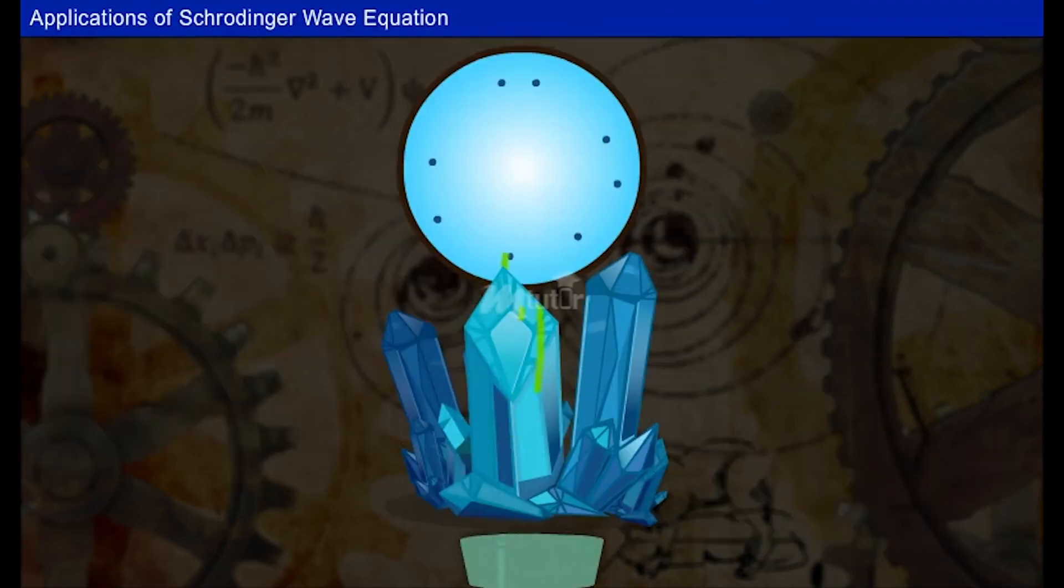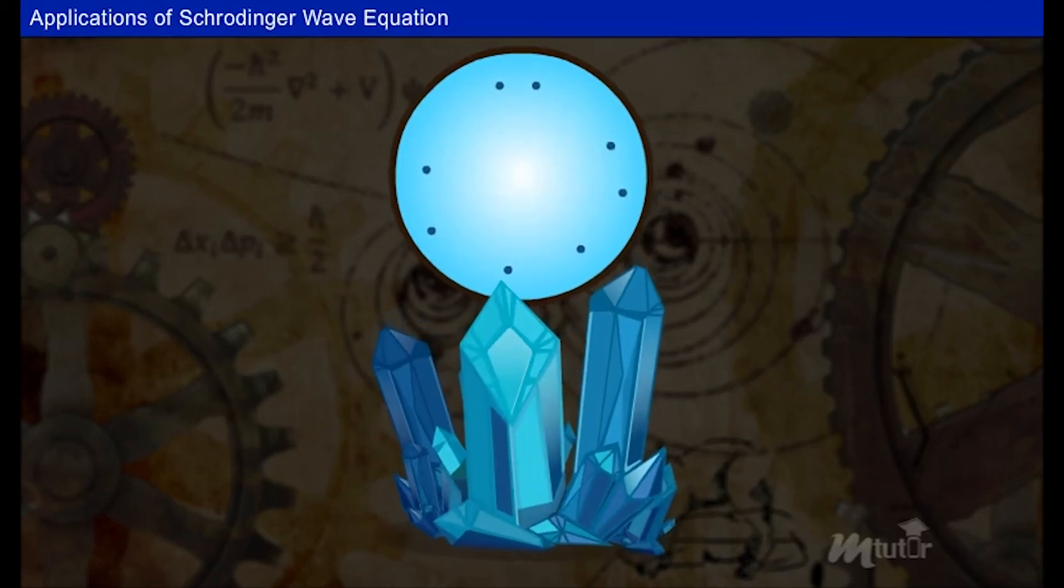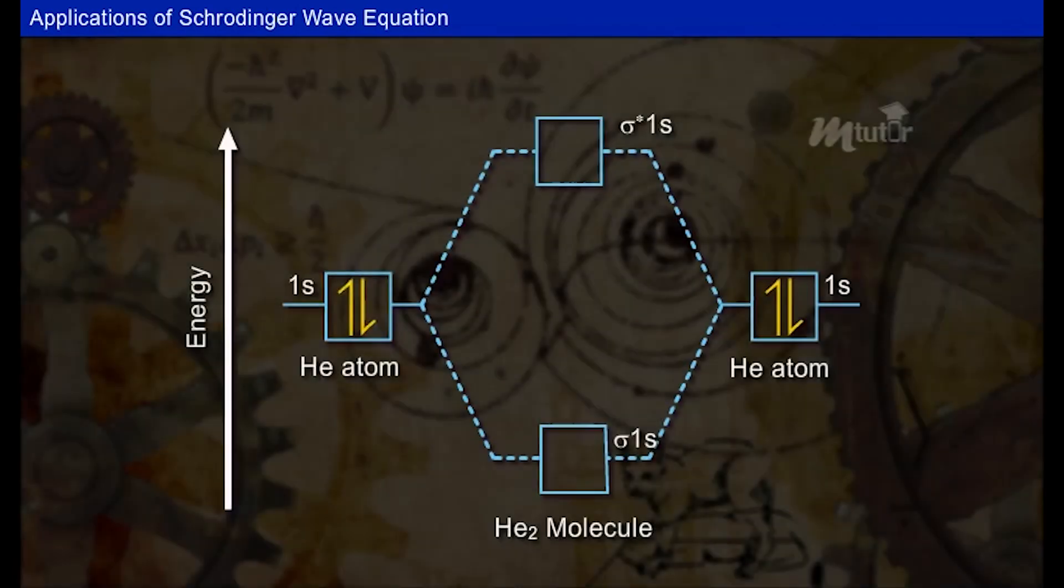Let us move on to the applications of Schrödinger Wave Equation. It is used to compute intensity of waves scattered by a crystal in the direction of the detector, as in the cases of diffraction phenomena of x-rays. It is also used to understand the behavior of electrons in atomic and molecular orbitals with appropriate modification.